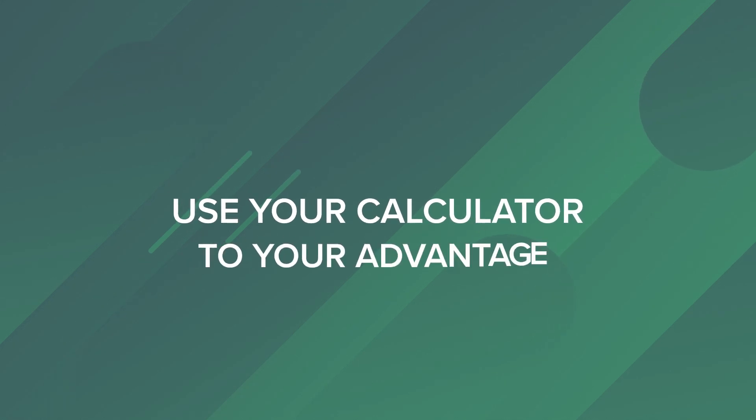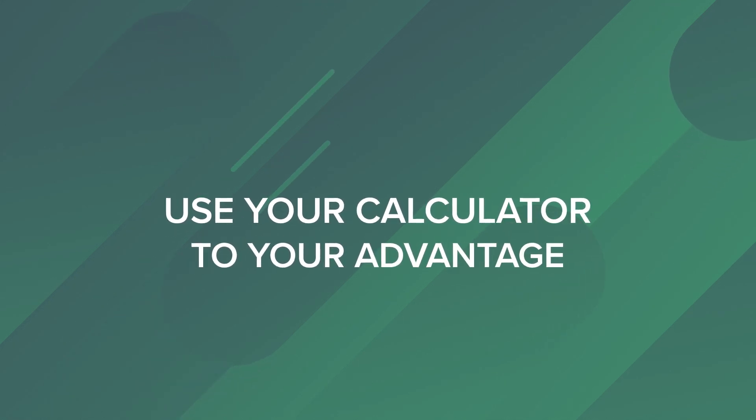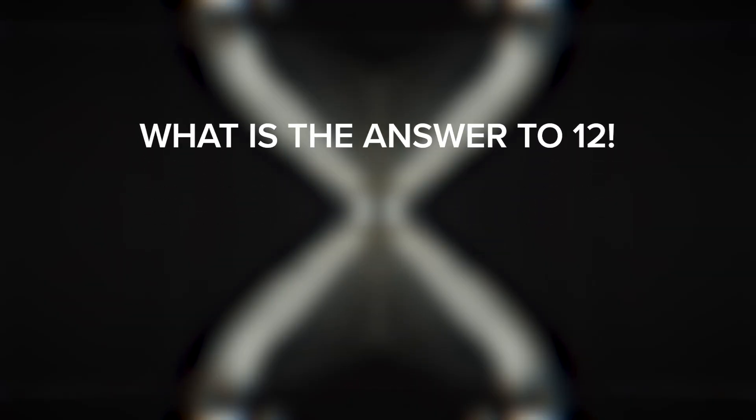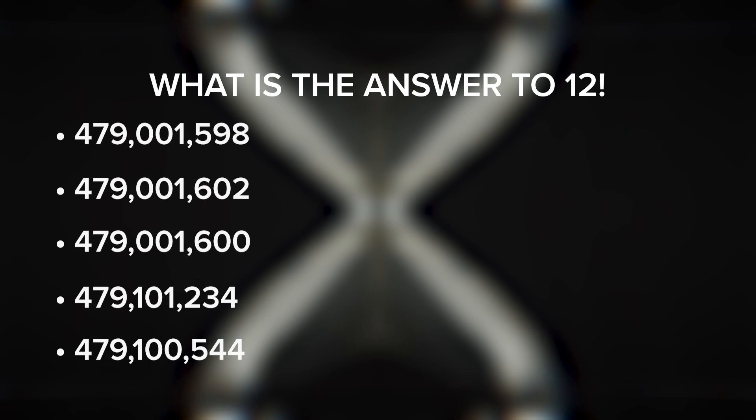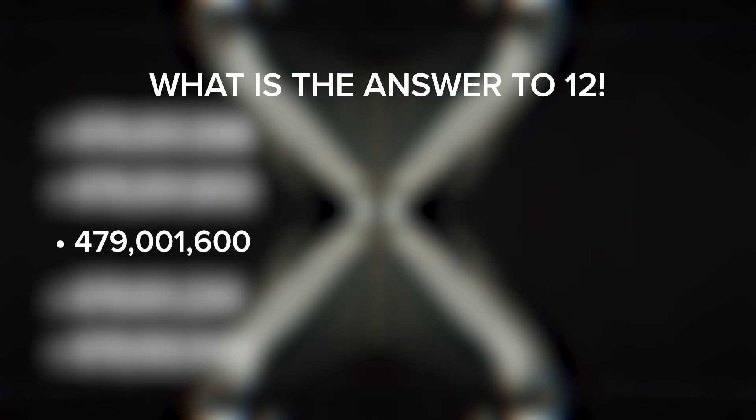Tip number two: use your calculator to your advantage. The calculator's there, but do we need to use it all the time? No — if you do, you're going to be slow. You might even make mistakes because it's an on-screen calculator and you're just going to waste time. For example, if you need to know the answer of what is 12 factorial and you have five answer choices and only one ends in a zero...